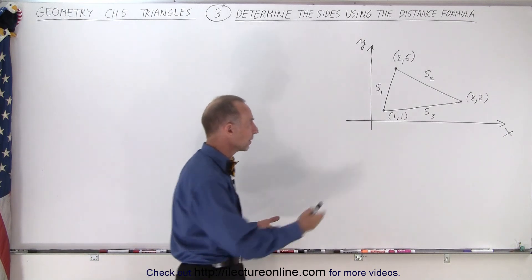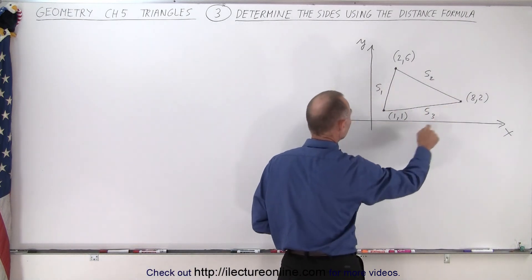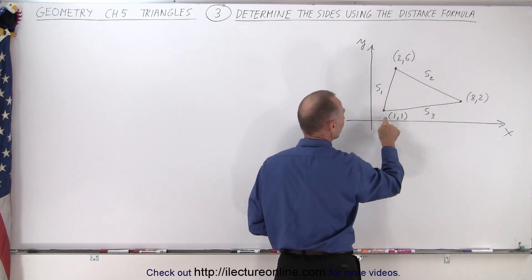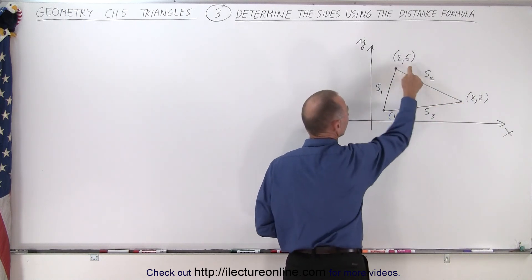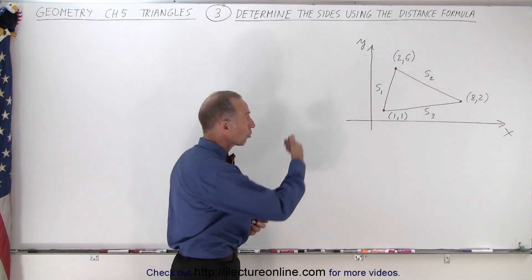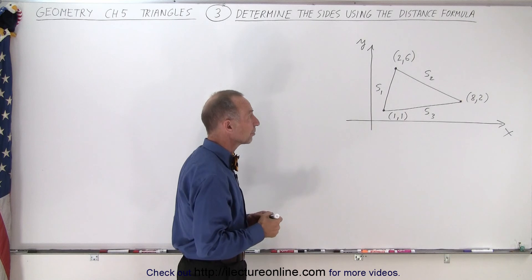So here we have an example. We have an xy plane, we have a triangle, and notice we have the three corners of the triangle with their x and y coordinates: (1,1), (2,6), and (8,2). And so we're now going to determine the length of these three sides, S1, S2, and S3.